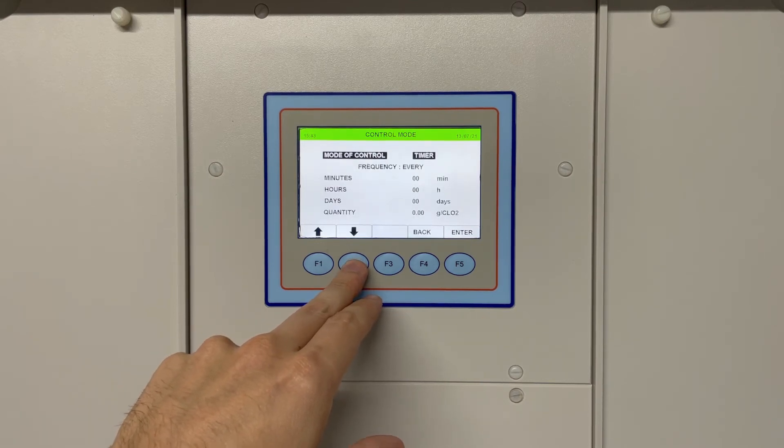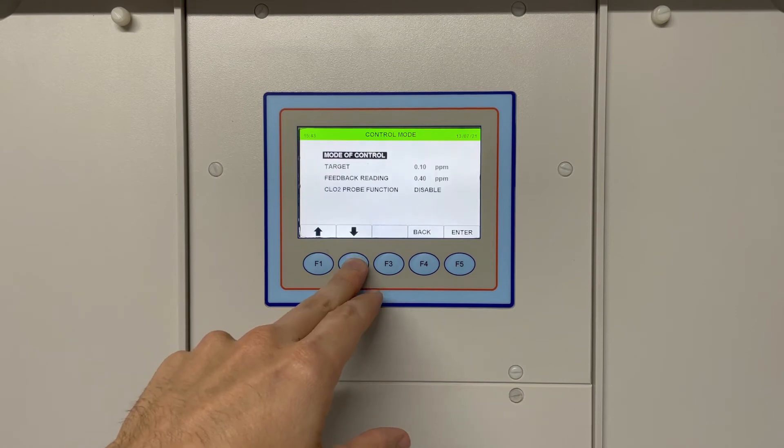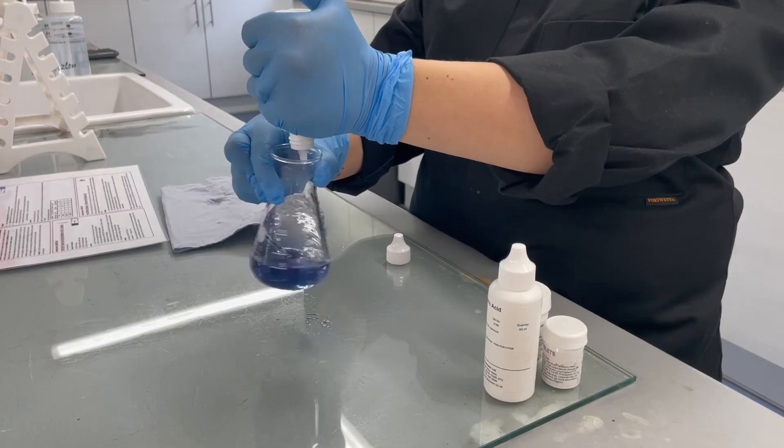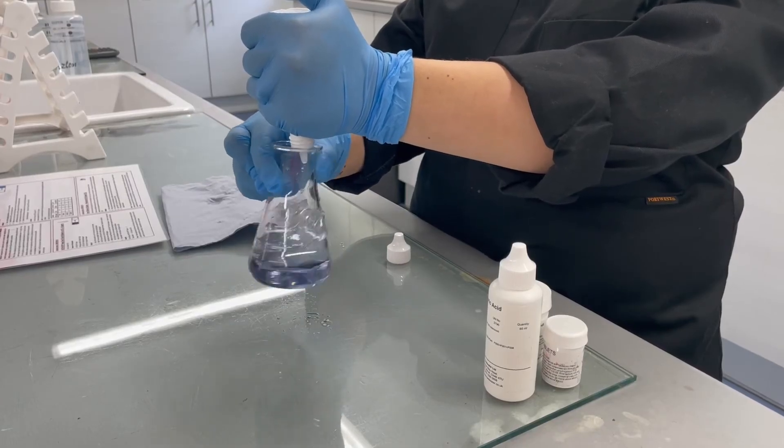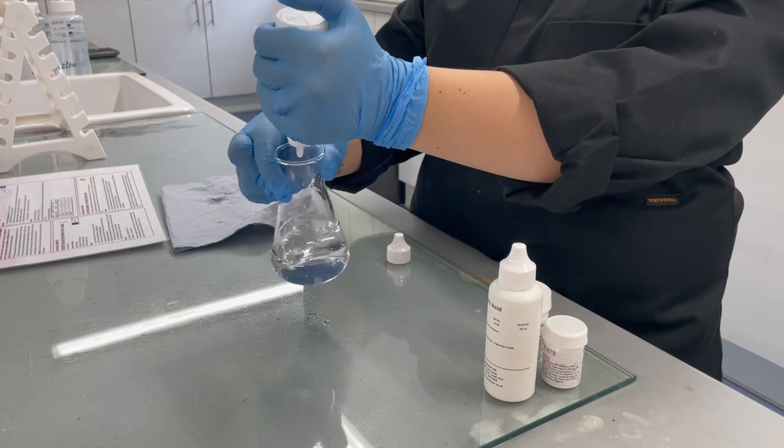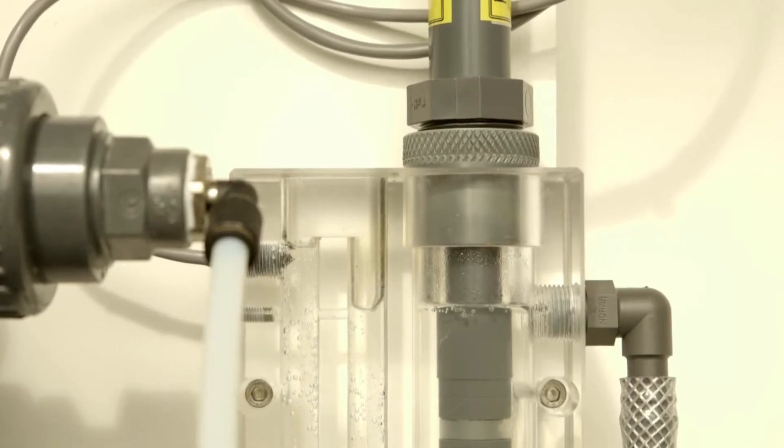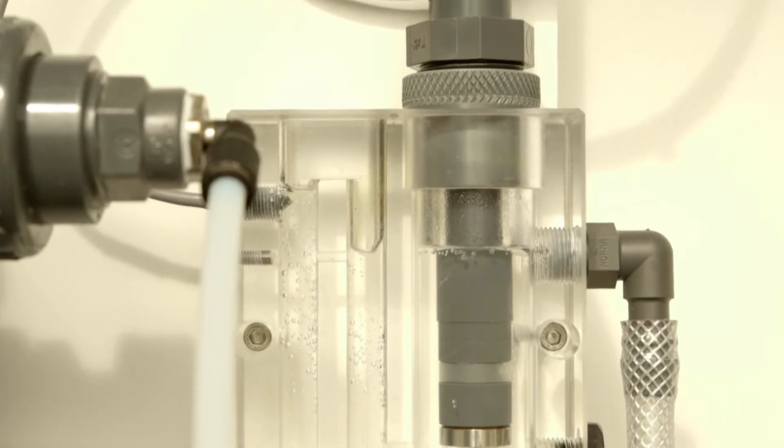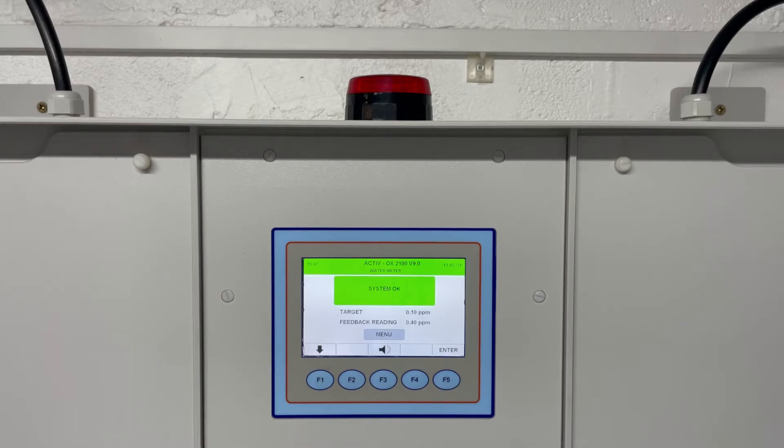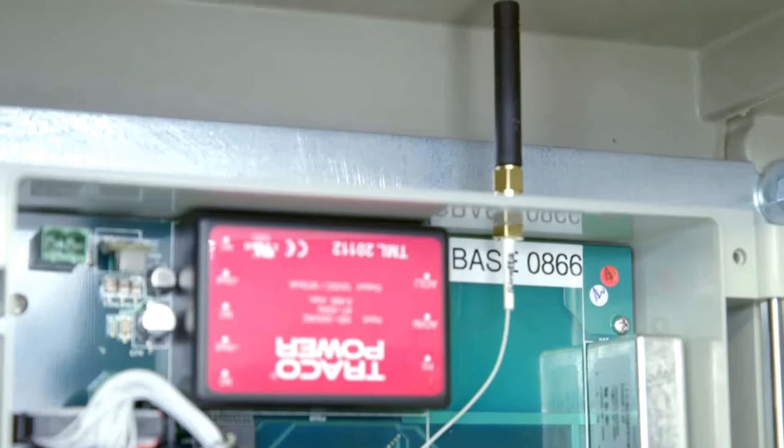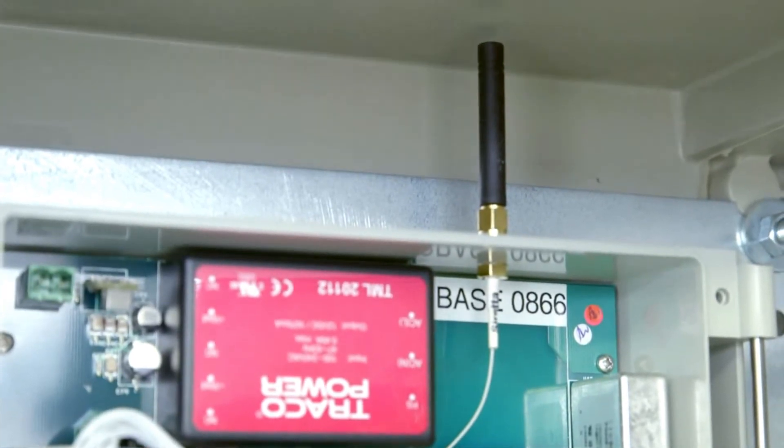The chlorine dioxide can be measured at the point of use using a simple test kit and the dosage rate adjusted accordingly. Additionally, the installation of probe control allows for constant monitoring and automatic adjustment of chemical dosage. Beacon and siren options are available to alert to problems including chemical low-level and no-flow alarms. There is also the option for remote telemetry.